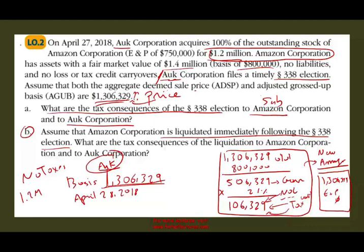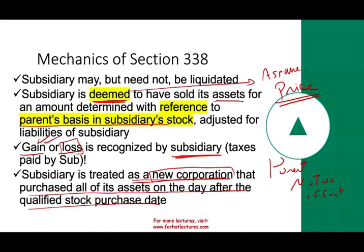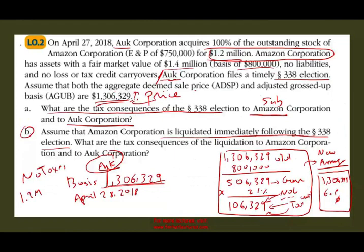Higher basis gives the new company more depreciation and less gain down the road. So basically, the old company is deemed to have bought their asset. Under Section 338, rather than just buying the stocks, we make the assumption that we bought the assets, which gives us a higher basis — higher depreciation, lower future gain. And the old company can use its tax attributes to reduce taxes when they deem to have sold the asset.